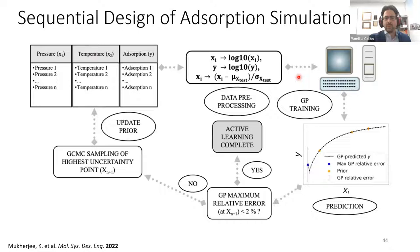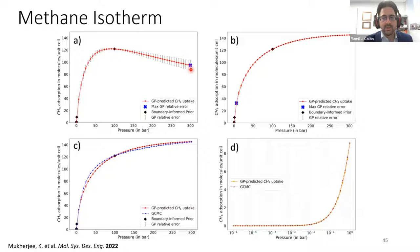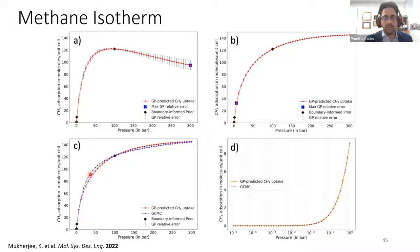Let me show how this works with a methane isotherm. The black points are the prior — the first points fed in. The red line is the prediction, and the bars represent the predicted uncertainty from the model. We ask: where's your maximum relative uncertainty? We simulate at that point. The next iteration dramatically reduces uncertainties, and we get something that looks like an adsorption isotherm. The final predicted isotherm in red is directly compared with GCMC simulations in blue — great agreement with just five points: three for the prior and two additional iterations.